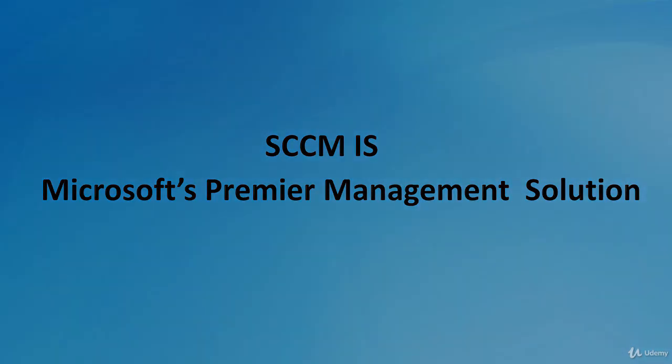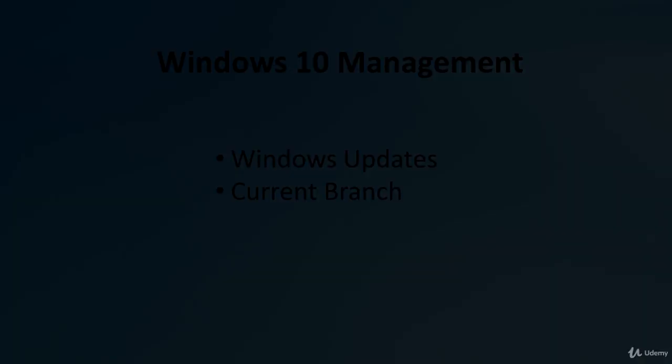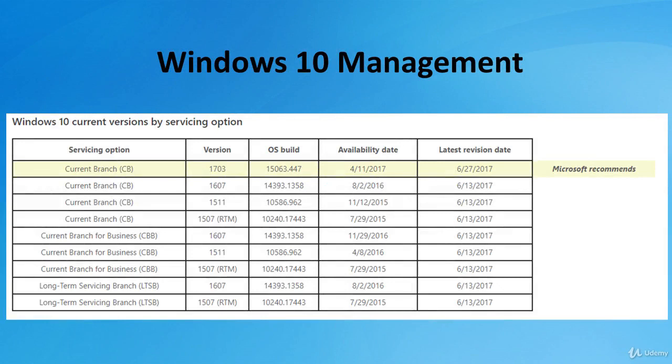So what can SCCM do? Windows 10 Management: Configuration Manager is designed to keep pace with Windows 10 updates and the current branch, to provide support for new Windows features as they become available. Current branch refers to security updates, bug fixes, and new features published by Microsoft every few months. For example, the current Windows 10 branch is 1703 as of April 11, 2017. When your clients reach the end of support for their current branch, alerts can be viewed.